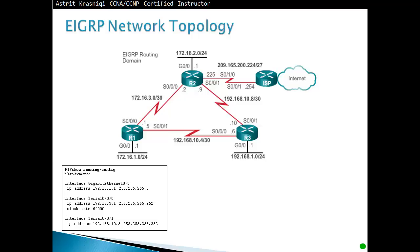Show running configuration on Router 1. Interface G0/0 has the IP address 172.16.1.1/24, so 255.255.255.0. S0/0/0 has 172.16.3.1 and it's /30, so 255.255.255.252. S0/0/0 is the DCE so it has the clock rate. Interface S0/0/1 has IP address 192.168.10.5, /30, so 255.255.255.252. Both interfaces have no shutdown.